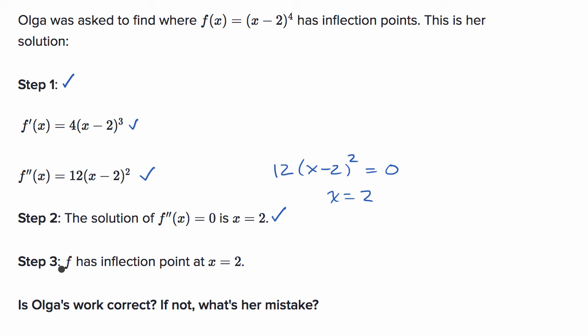So step three, Olga says f has an inflection point at x equals two. So she's basing this just on the fact that the second derivative is zero when x is equal to two. She's basing this just on the fact that f prime prime of two is equal to zero. Now I have a problem with this, because the fact that your second derivative is zero at x equals two, that makes two a nice candidate to check out, but you can't immediately say that we have an inflection point there.